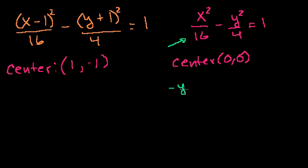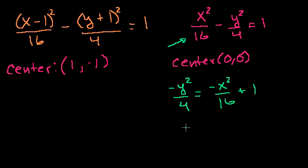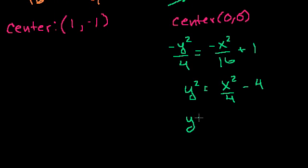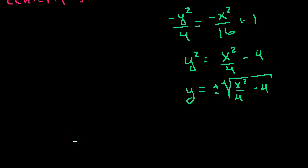Solving for y: subtract x squared over 16 from both sides to get minus y squared over 4 equals minus x squared over 16 plus 1. Multiply both sides by minus 4 to get y squared equals x squared over 4 minus 4. So y equals plus or minus the square root of x squared over 4 minus 4. To find the asymptotes, think about what happens as x approaches positive or negative infinity. This gives intuition for where the asymptote equations come from.